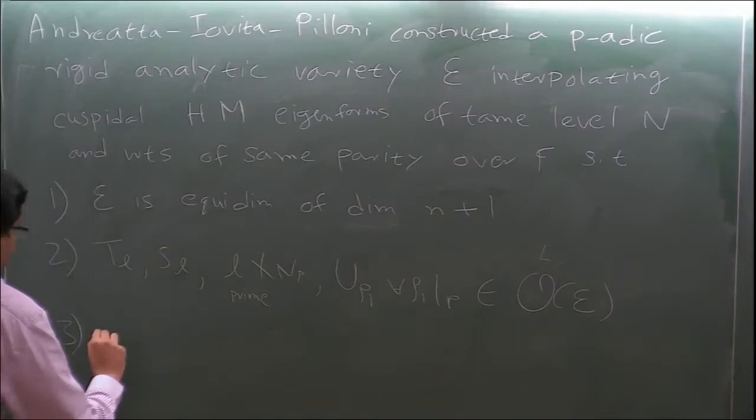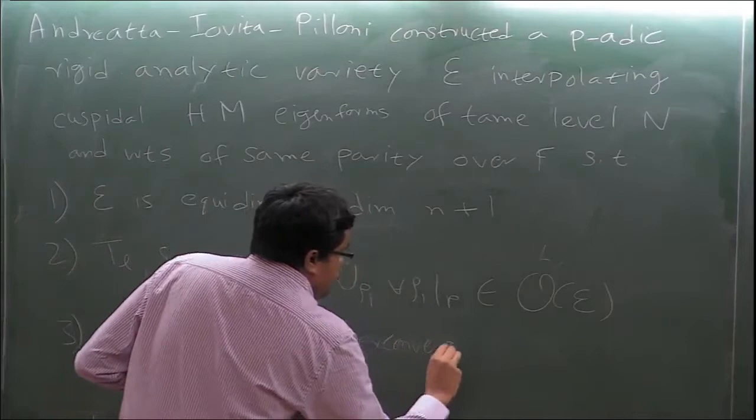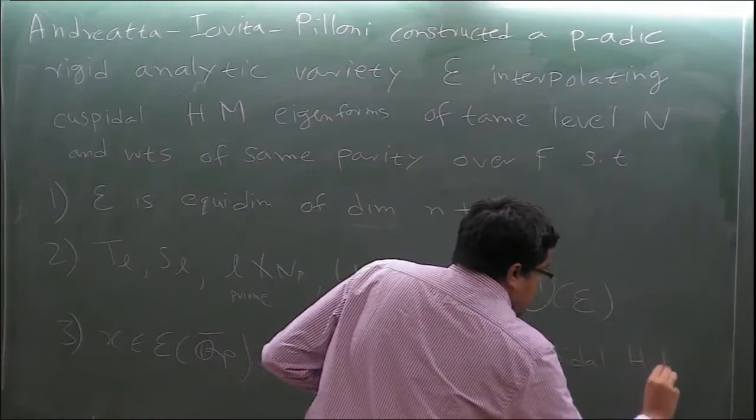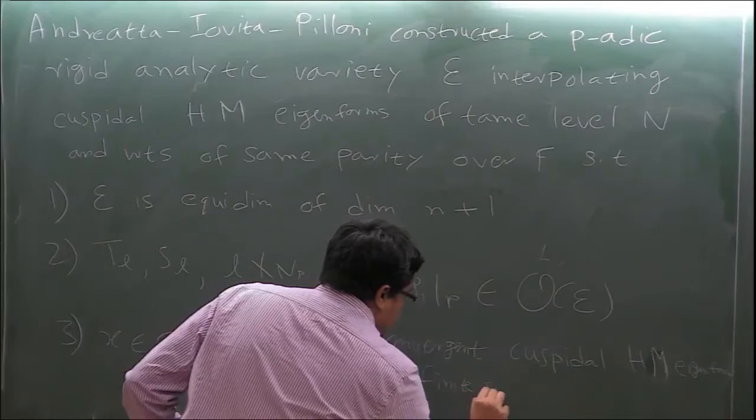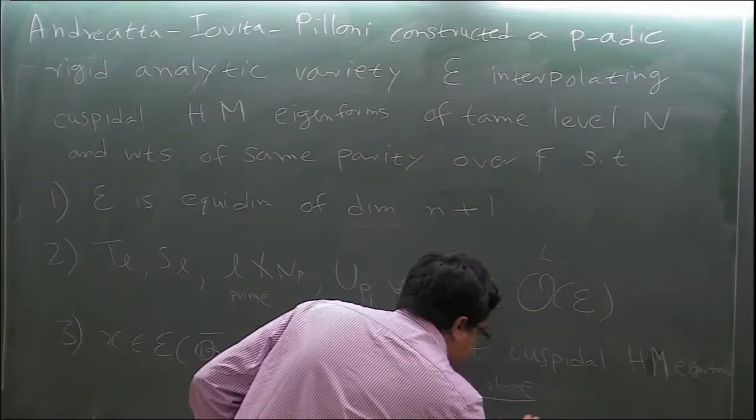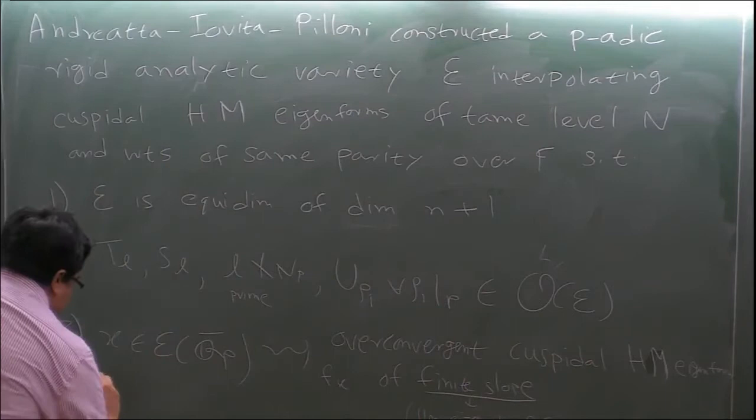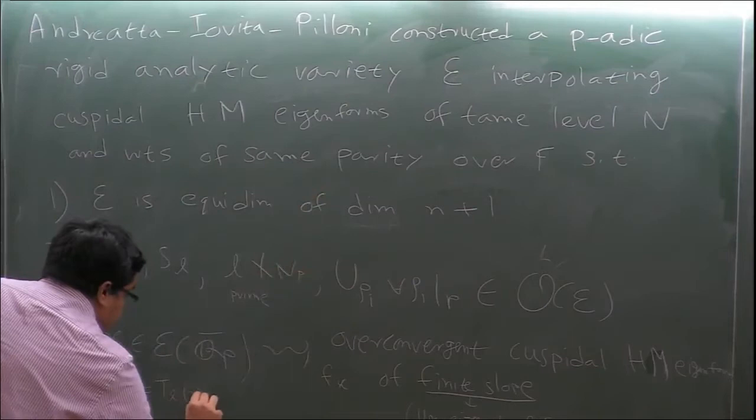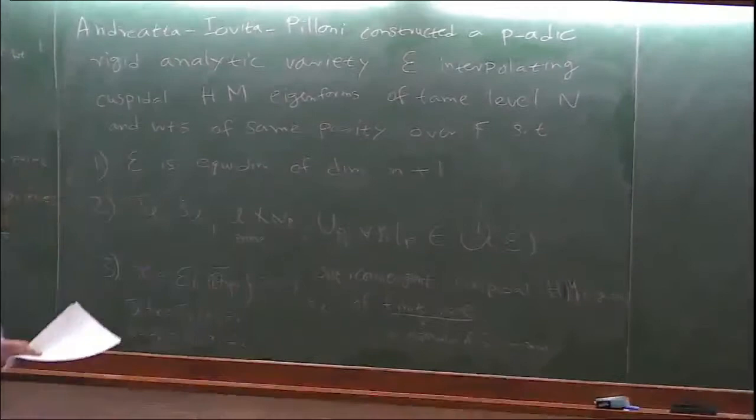If you take a Q_p bar point of this eigenvariety, then it corresponds to an over-convergent cuspidal HM eigenform F_x of finite slope. Finite slope means U_{P_i} eigenvalues are non-zero for all P_i. And this F_x is such that if you want to look at the T_L eigenvalue of F_x, that's just evaluation of this analytic function T_L at x, that gives you the T_L eigenvalue of F_x.